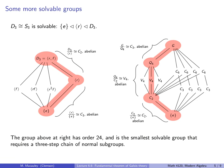Here are some more examples of solvable groups. D3, which is isomorphic to S3, is solvable. There's only one chain of subgroups that works — because the subgroups of order 2 are not normal in D3, so this group is barely solvable. On the right is a group of order 24 — the smallest solvable group that requires a three-step chain of normal subgroups.